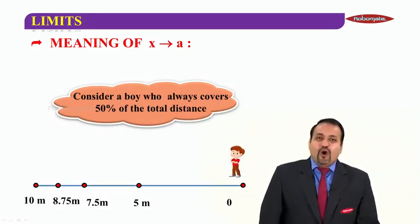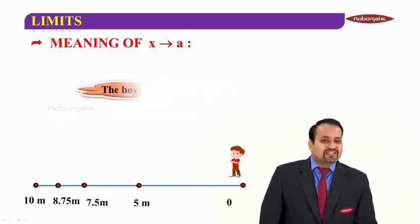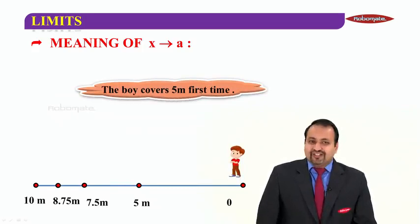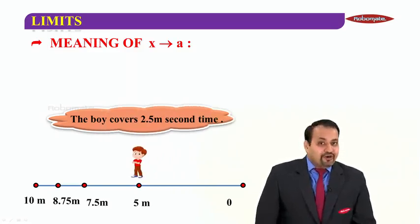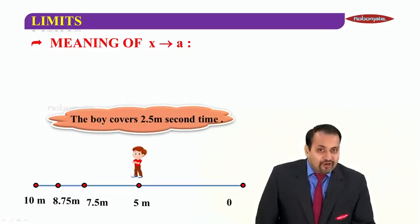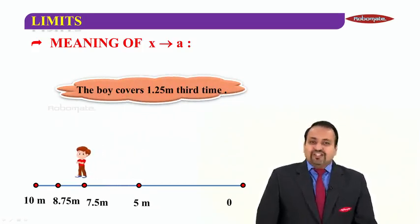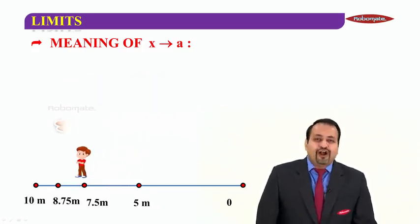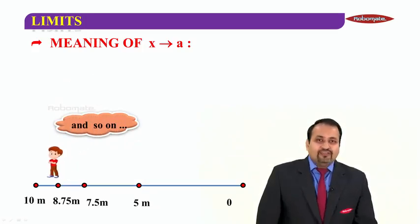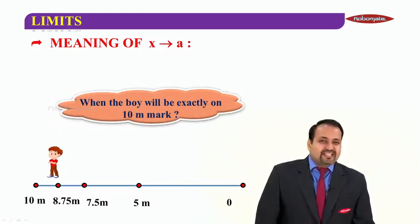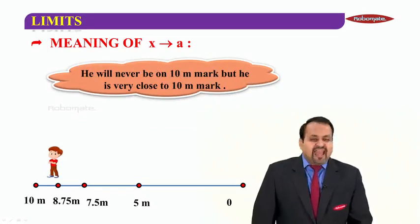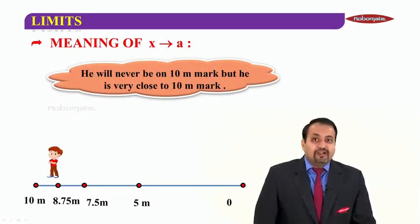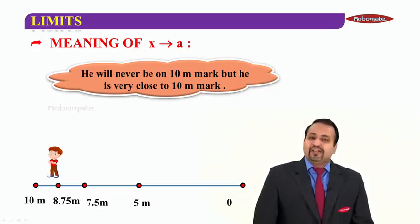Consider a boy who always covers 50 percent of the total distance. That means the boy covers 5 meter for the first time, so he will be at 5 meter mark. The boy will cover 50 percent of the remaining 5 meter. That means he will cover 2.5 meter for the second time. Third time, he will cover 1.25 meter and so on. If this is the case, when the boy will be exactly on 10 meter mark, can you predict? The answer is, the boy will be never on 10 meter mark, but he is very close to 10 meter mark.